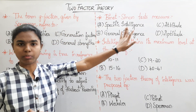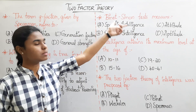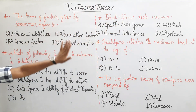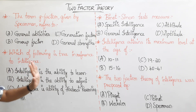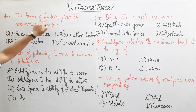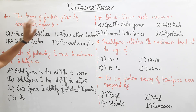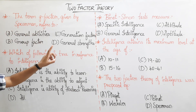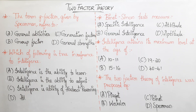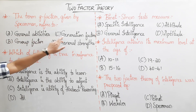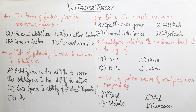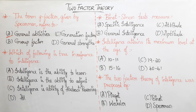Question 1: The term G-factor given by Spearman refers to — Option A: general abilities, Option B: group factor, Option C: generation factor, Option D: general strengths. The correct answer is Option A: general abilities.